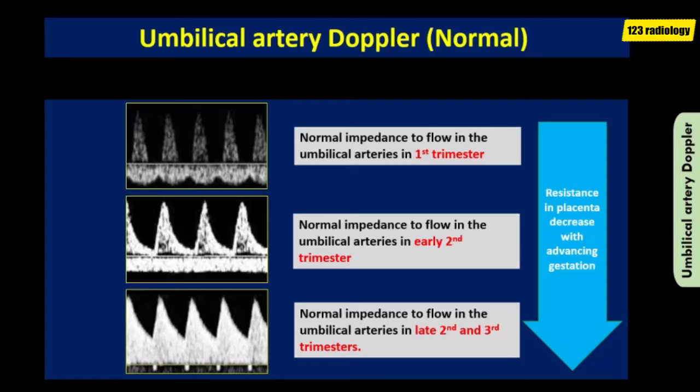The resistance within the umbilical arteries, recorded as the pulsatility index, reflects the resistance to flow within the placenta. In a normal functioning placenta, the resistance to blood flow should steadily decrease throughout pregnancy in response to ongoing development of the placental bed, and even in diastole there is forward blood flow. As you can see in these images, there is a gradual decrease in placental resistance with advancing gestation, manifested by a gradual increase in diastolic flow.